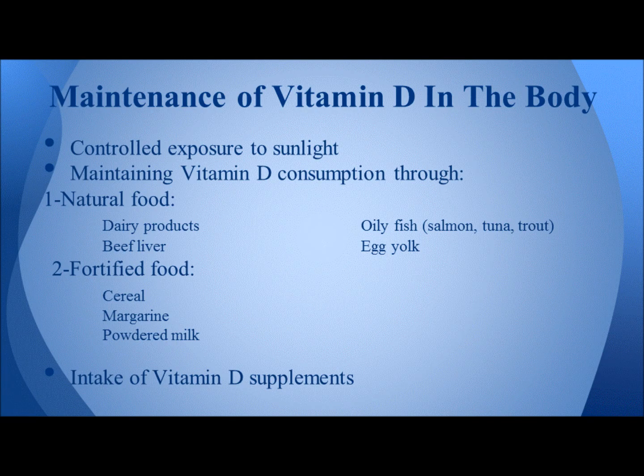Consumption through diet: we can consume vitamin D through natural and fortified foods. Natural foods include dairy products, oily fish, beef liver, and egg yolk. Fortified foods include cereal, margarine, and powdered milk. Although these foods contain little amounts of vitamin D, they do help in maintaining normal levels of vitamin D in the body.